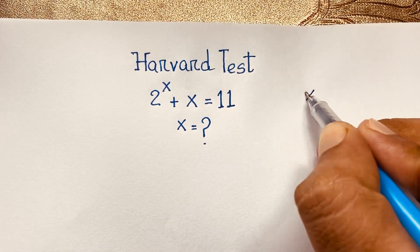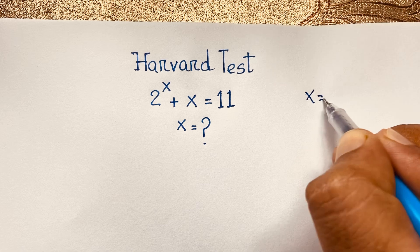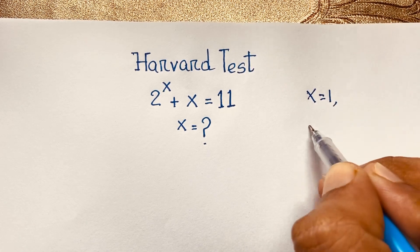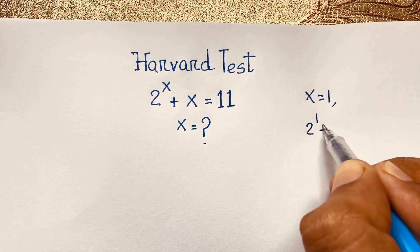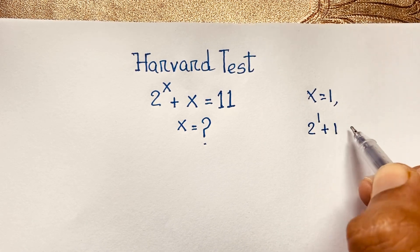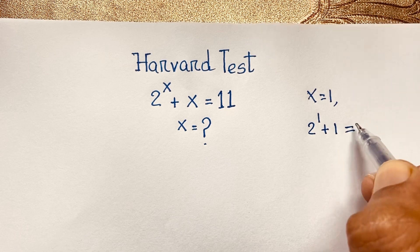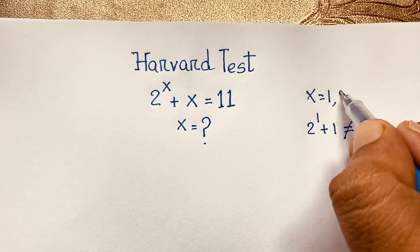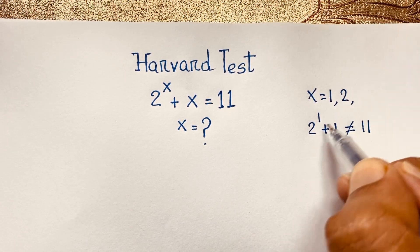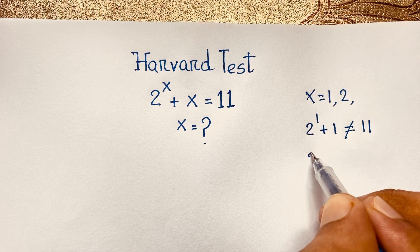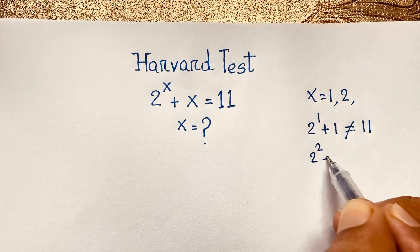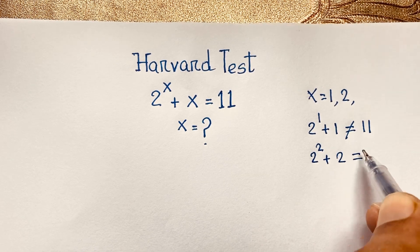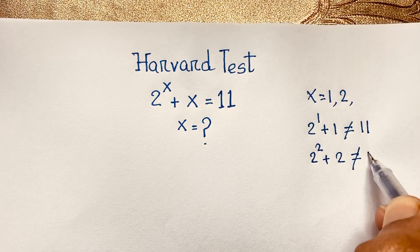If you think x is equal to 1, then 2 to the power of 1 plus 1 will be 3, which is not equal to 11. But if you think x is equal to 2, then 2 to the power of 2 plus 2 is also not equal to 11.